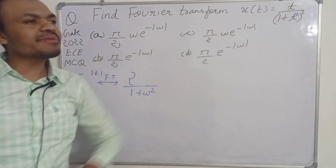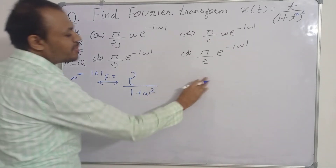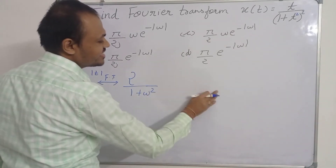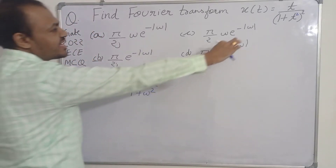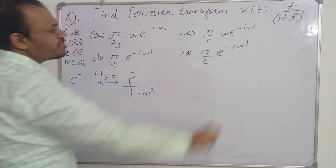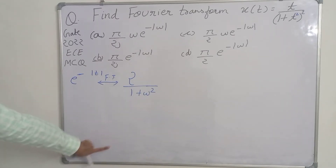But here we have e^(-|ω|) — that is, the exponential is in terms of omega. So it is clear that we will have to use the duality property somewhere in this question, because the given signal has minus mod of t in the denominator but the transform involves e^(-|ω|).